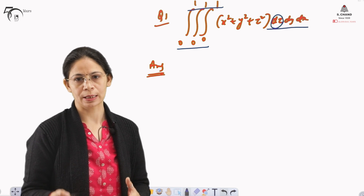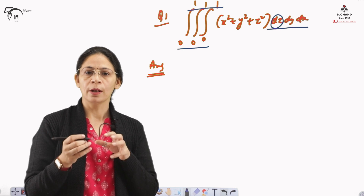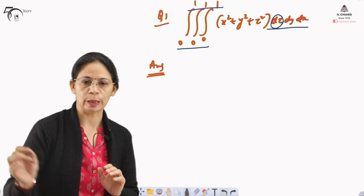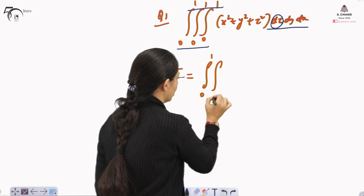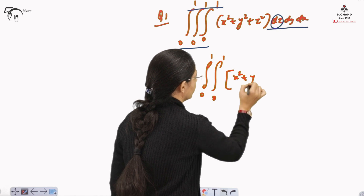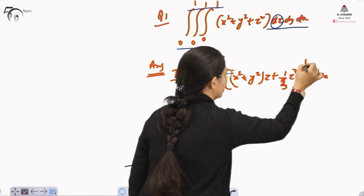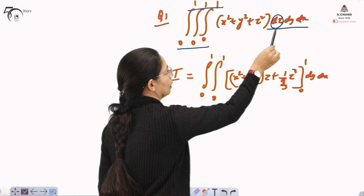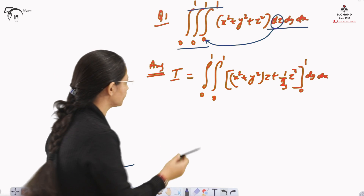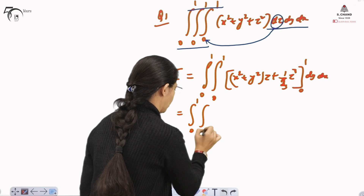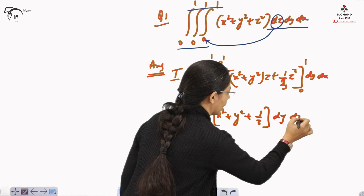The rules of integration are similar, so when we integrate with respect to z, we treat x and y as constants. With respect to any one variable, all the rest of the variables are treated as constants. So integrating with respect to z first, this becomes the integral from 0 to 1, 0 to 1 of [x² + y²] times z + (1/3)z³, with the limits for z from 0 to 1, and it is dy dx. We substitute the limits for z, giving us the integral from 0 to 1, 0 to 1 of (x² + y² + 1/3) dy dx.